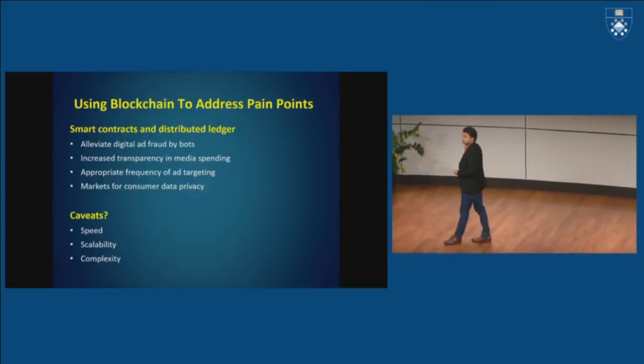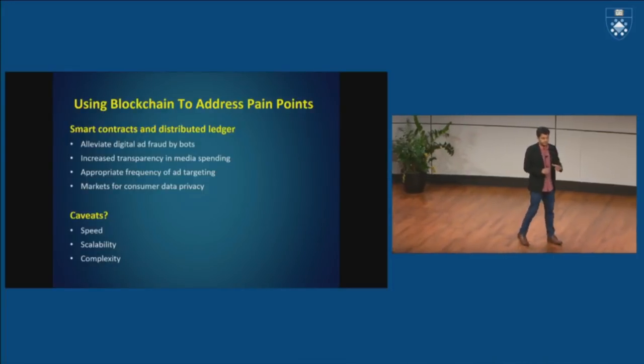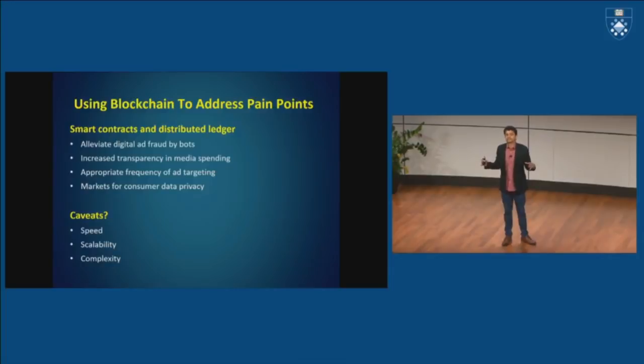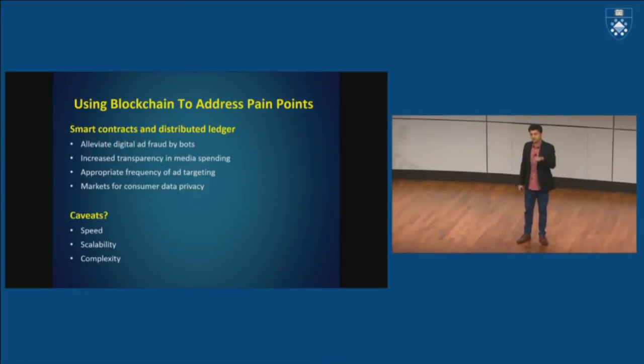The second is scalability. Programmatic marketing in the US alone engages in billions of transactions every single day by virtue of the fact that Ethereum, which is one of the faster blockchain applications, is still taking 15 seconds to validate transactions. We are not yet at that scale, but it can be done. And the third is complexity. Every single entity in the ad tech ecosystem, from the DSP to the SSP to the agencies to the trading desk to the ad exchanges, they all need to have blockchain installed.